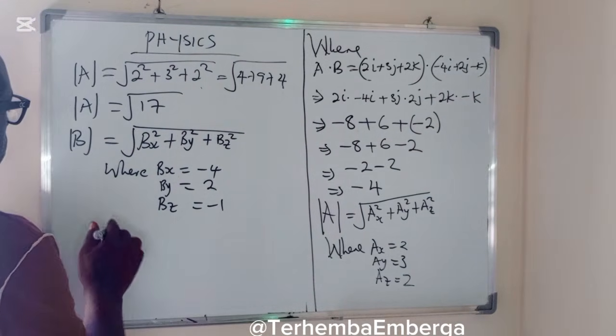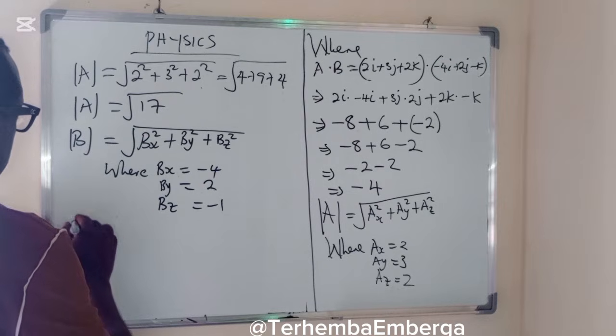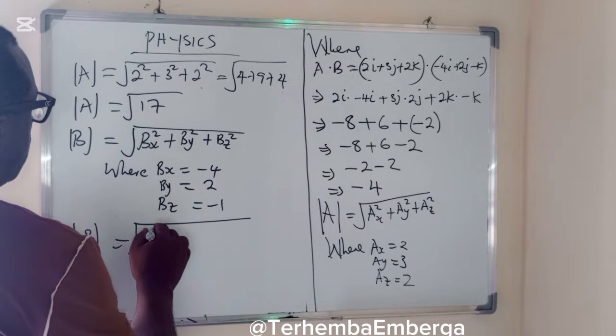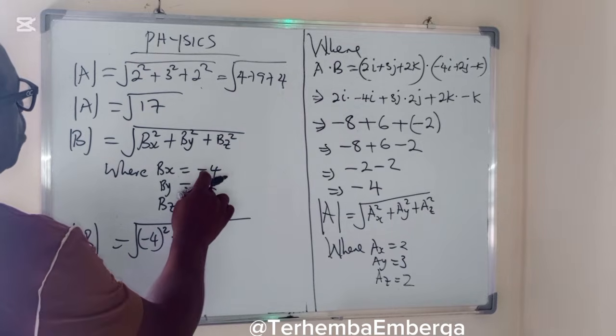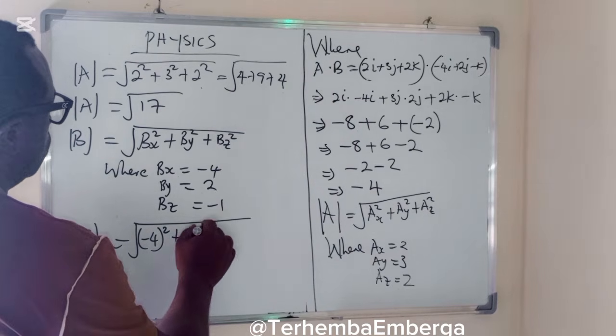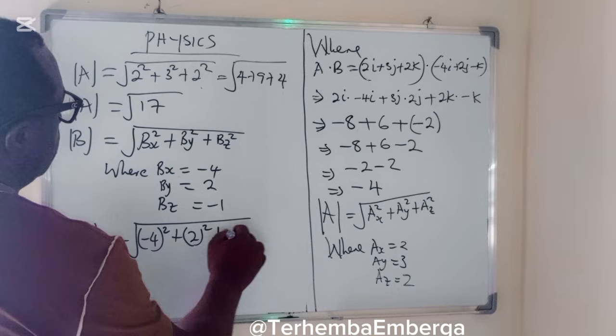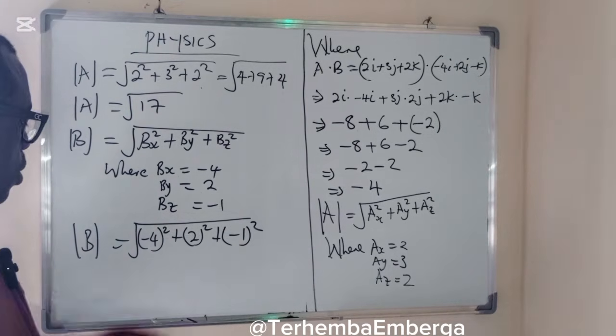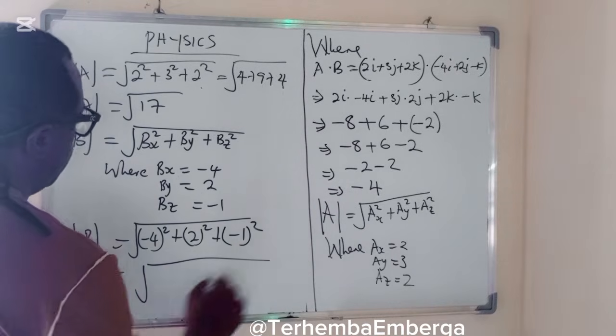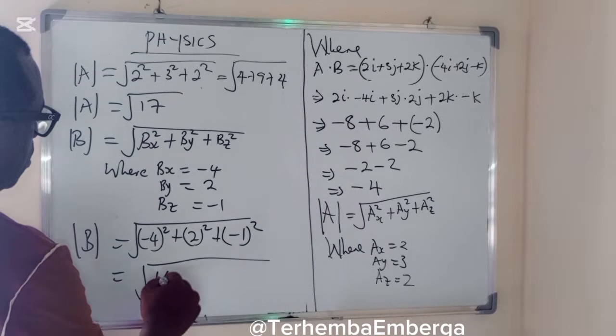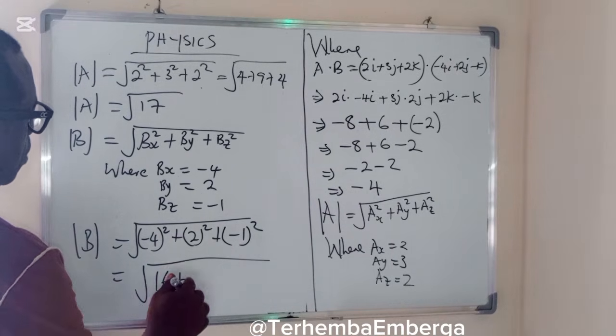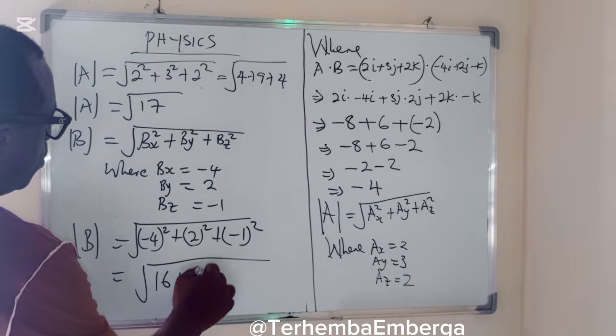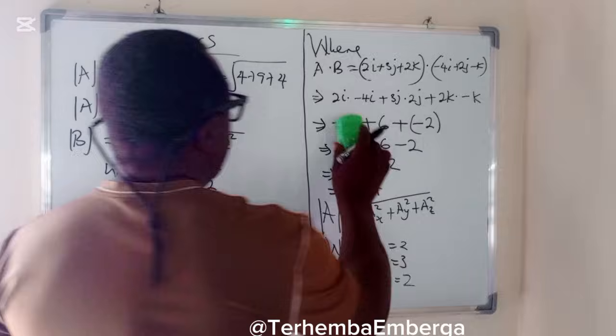So we'll now substitute. It's equal to the square root of minus 4 squared plus 2 squared plus minus 1 squared. So if we square this, we'll have 16 plus 2 squared is 4, plus 1 squared is 1.